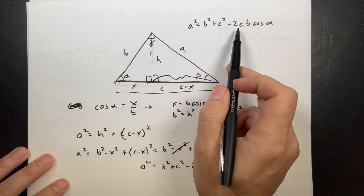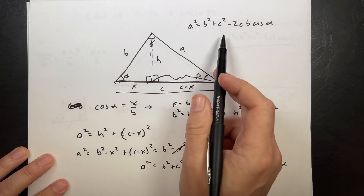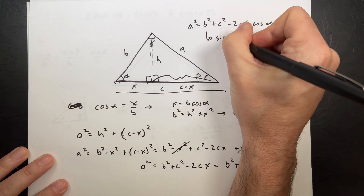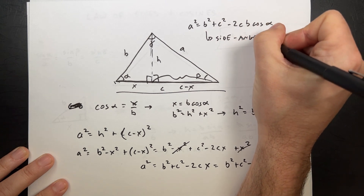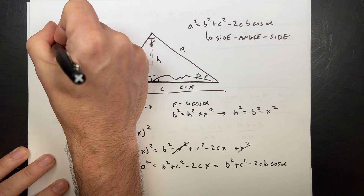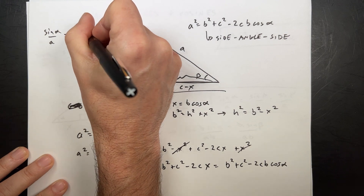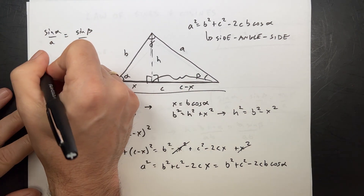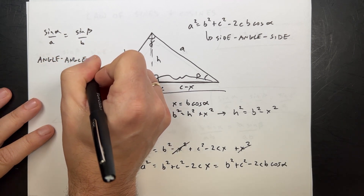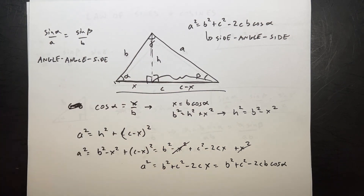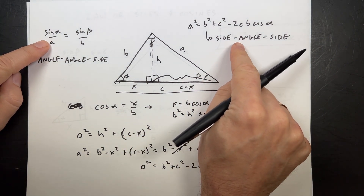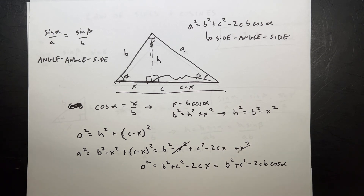You'll notice this is very useful if I have one of the angles but two of the sides — I can find the third side. This is used for side-angle-side. Now the other one, sine alpha over a equals sine beta over b — if I have two angles, so this is angle-angle-side, then I can find the second side. Or I could solve for the angle too if I know all three sides. You can play around with it. But that's how you derive these two things.